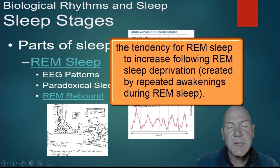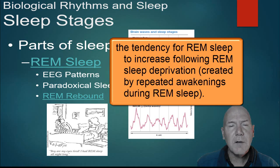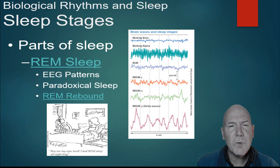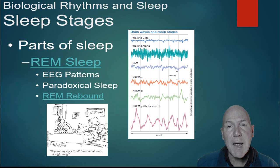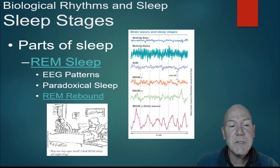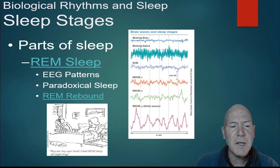REM rebound means your body keeps track — probably up to about two weeks — of when you don't get enough sleep and are missing REM. Then when you do sleep, your body compensates: you get into REM sleep more quickly and have more periods of it, longer lasting. It seems like the body is trying to catch up on lost REM sleep.